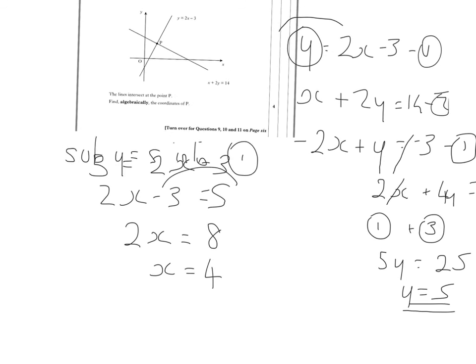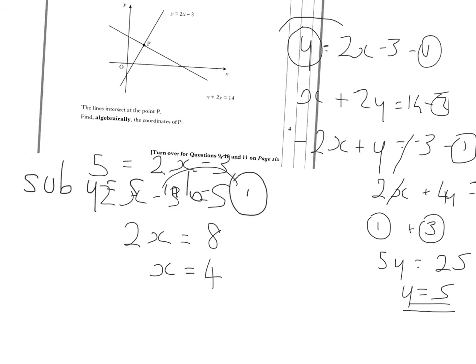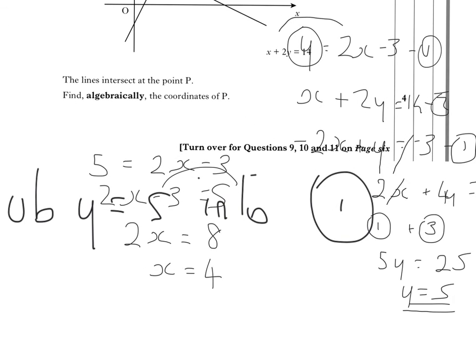The important point in this question is it does say find the coordinates of P. Now the question is really looking for me to communicate that as a point in brackets. So I need to make sure that I communicate that properly. The x coordinate is 4, the y coordinate is 5. Therefore I'm going to say that P, the point of intersection, is (4, 5). And that is the end of the question.